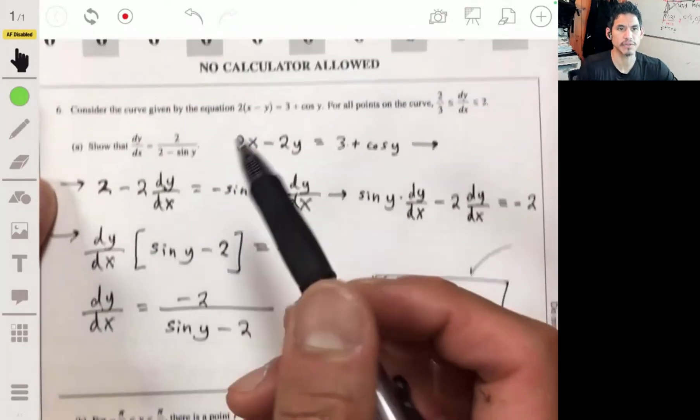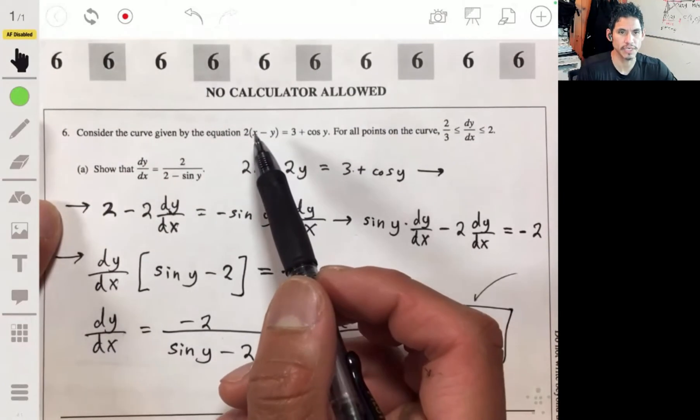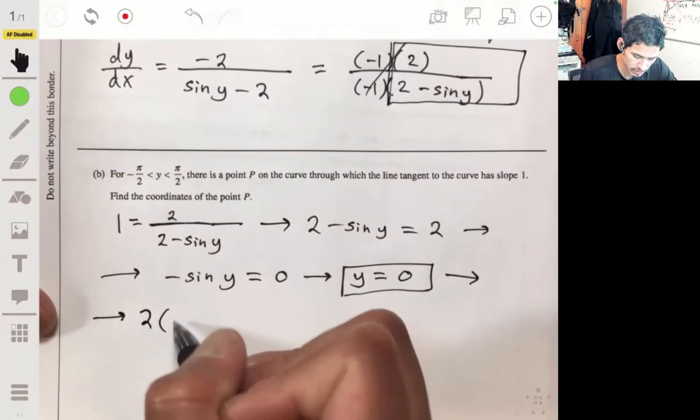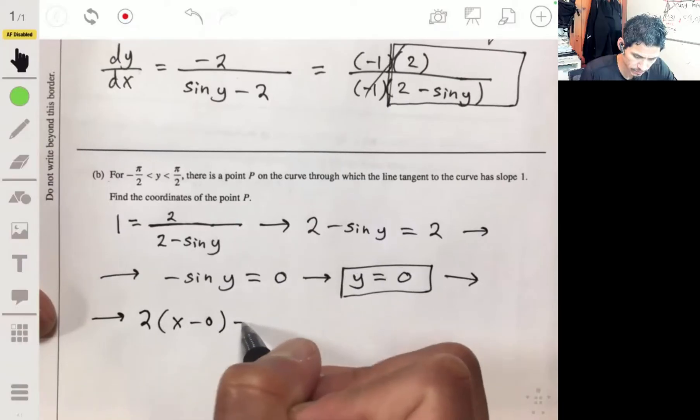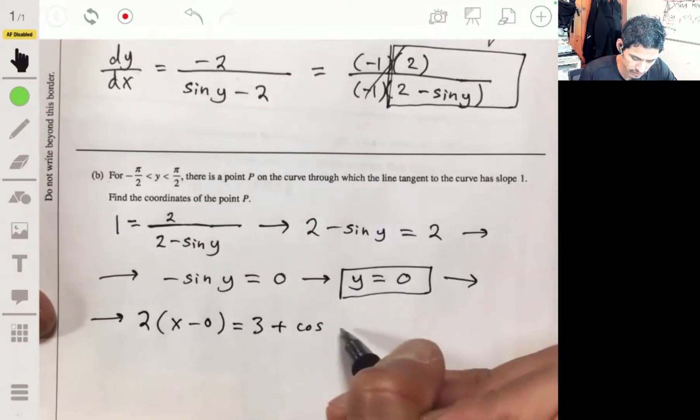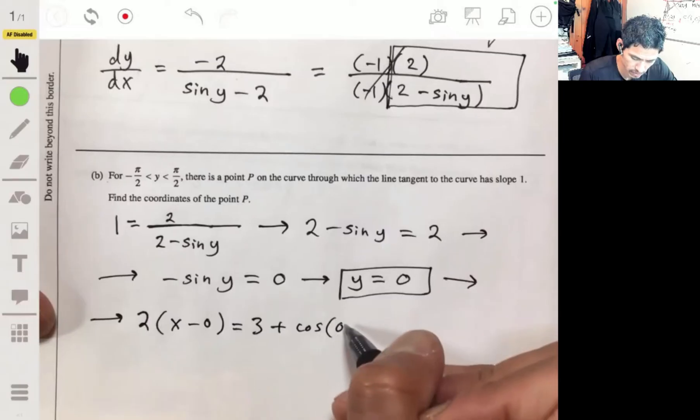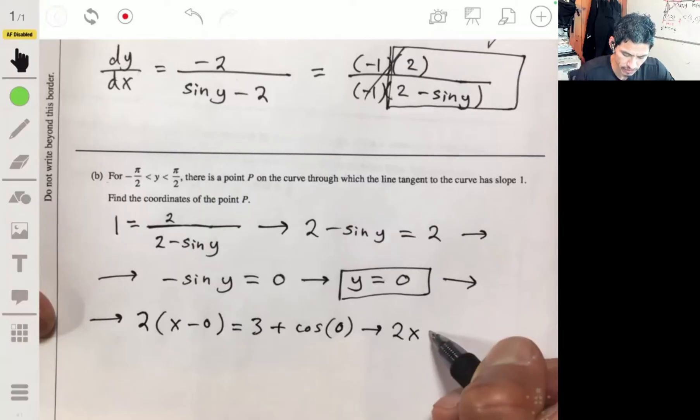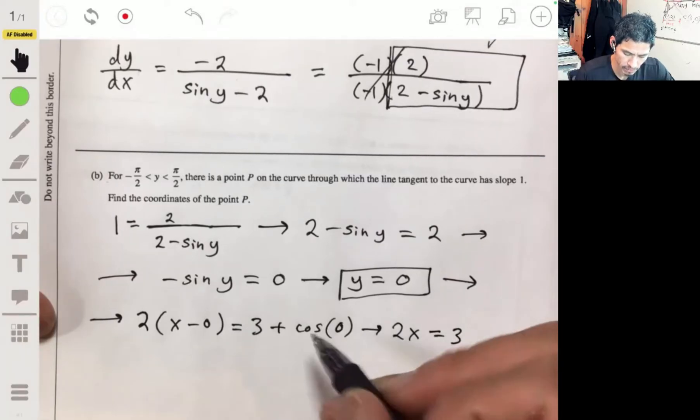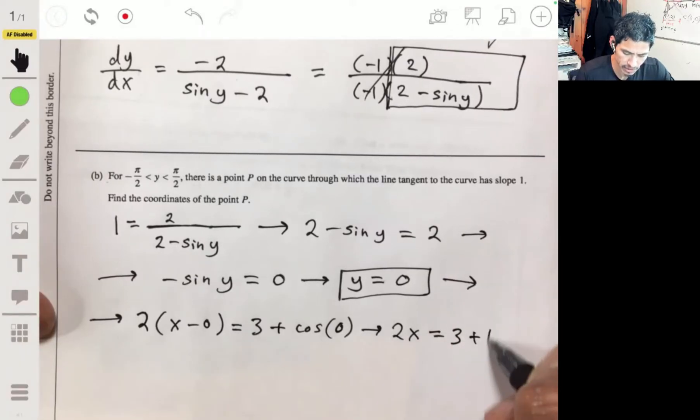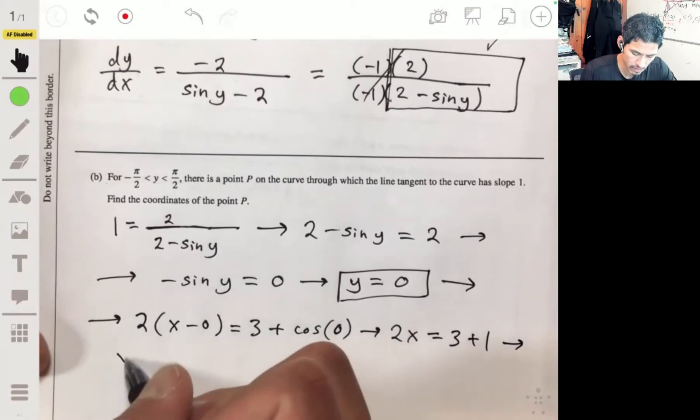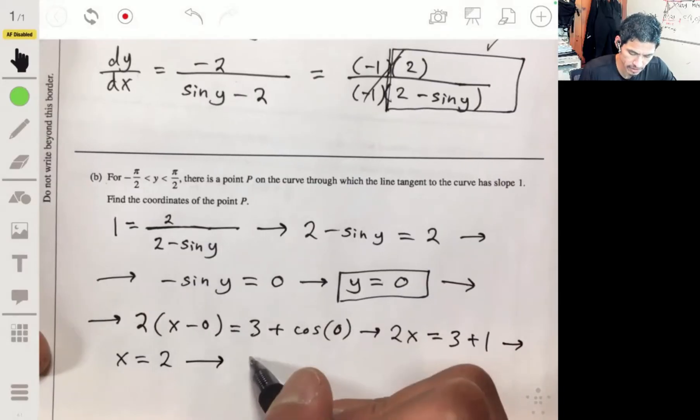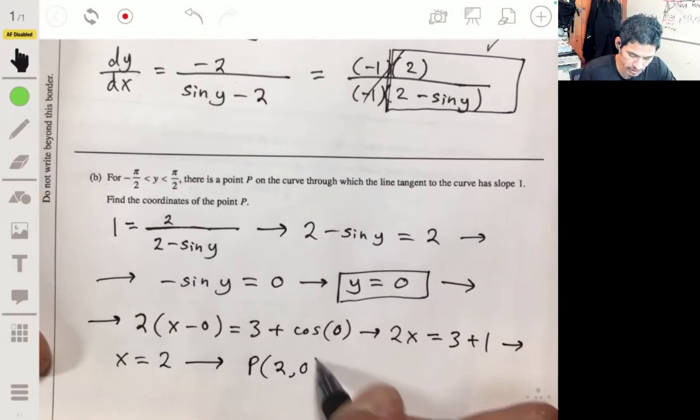So now we plug zero into the original equation and solve for x. So we'll get two times x minus zero is equal to three plus the cosine of zero. Which then means two x equals three plus the cosine of zero, which is one. So then x is going to be two. And then x is two. So then point P will be at the coordinates two comma zero.